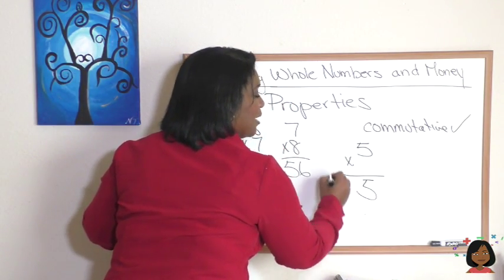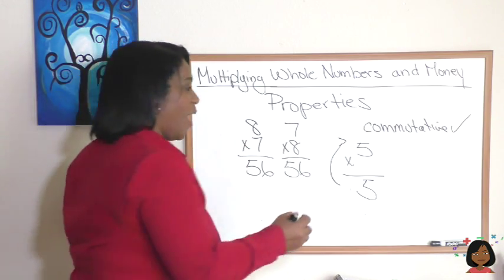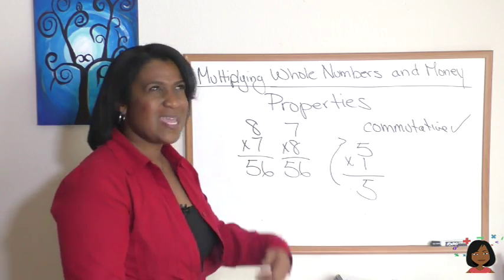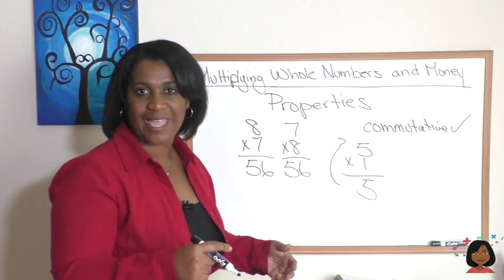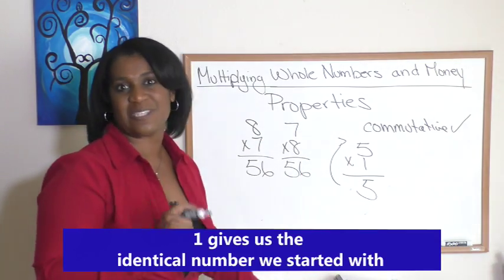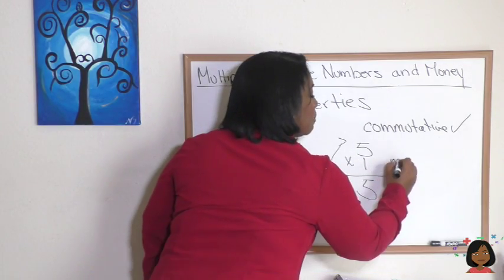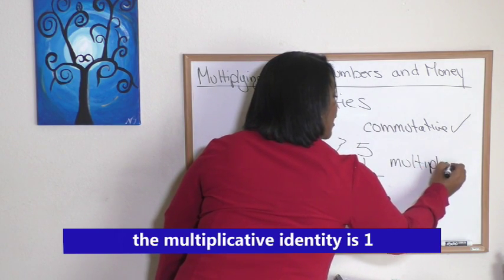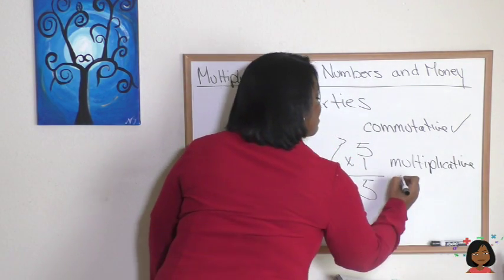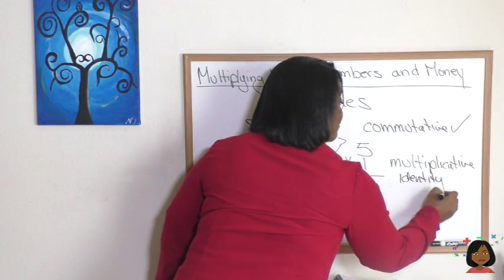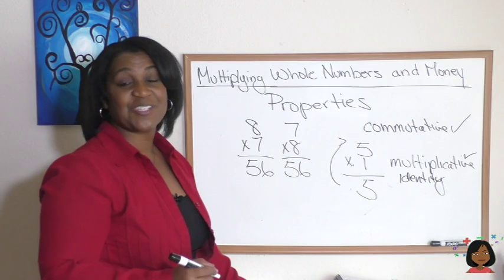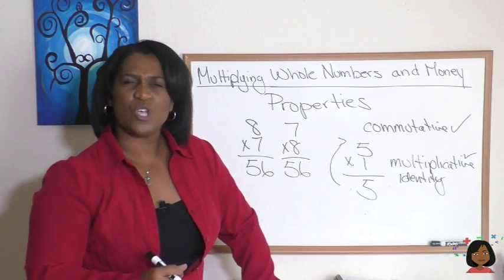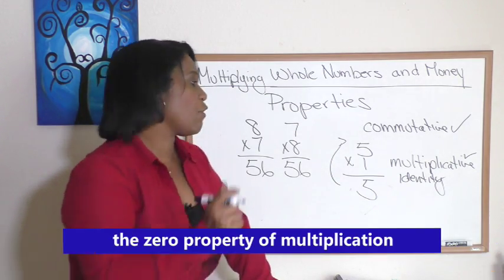What about multiplication? Five times what number gives us a five, gives us the identical number we started with? That would be one. So five times one is five, ten times one is ten, twenty-seven times one is twenty-seven. So one in multiplication gives us the identical number we started with. That's called the multiplicative identity. So yes, multiplication has an identity property.